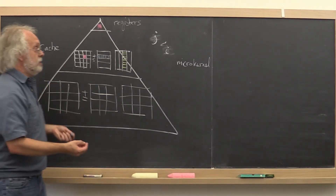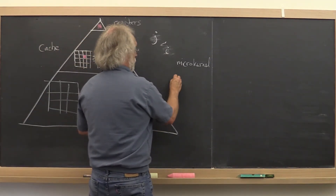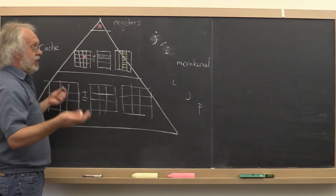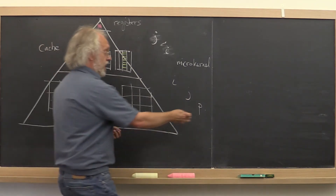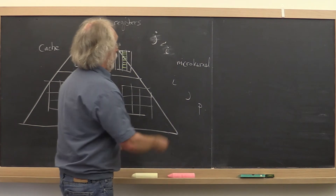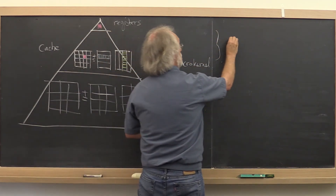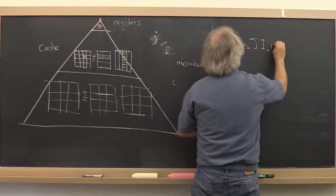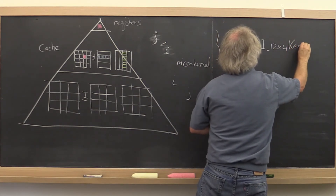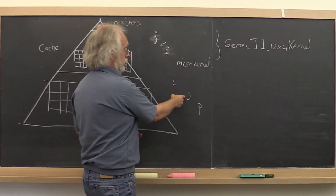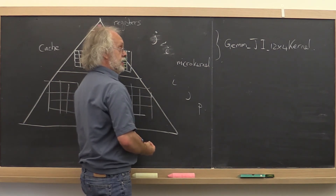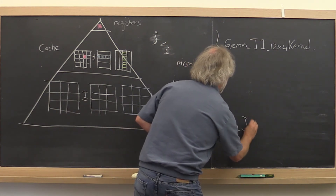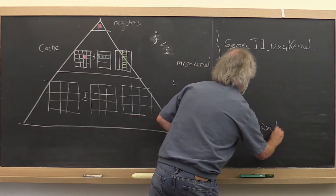So then we get something like a loop i, j, p — loop ordering i, j, p, or whatever ordering you pick — where then in the middle you call this routine right here, which Mark, for example, might have called gemm_j_i, a 12 by 4 kernel. So you have a loop over i, a loop over j, and then inside of that you call the gemm_j_i 12 by 4 kernel.